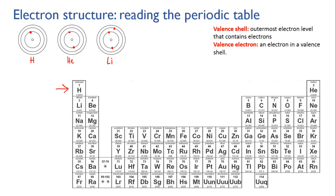For any atom, this highest filled level is called its valence shell, and the electrons in the valence shell are called valence electrons. Let's have a quick look at sodium — it has 11 protons and therefore 11 electrons as well. Two go in the first level, and eight in the next.